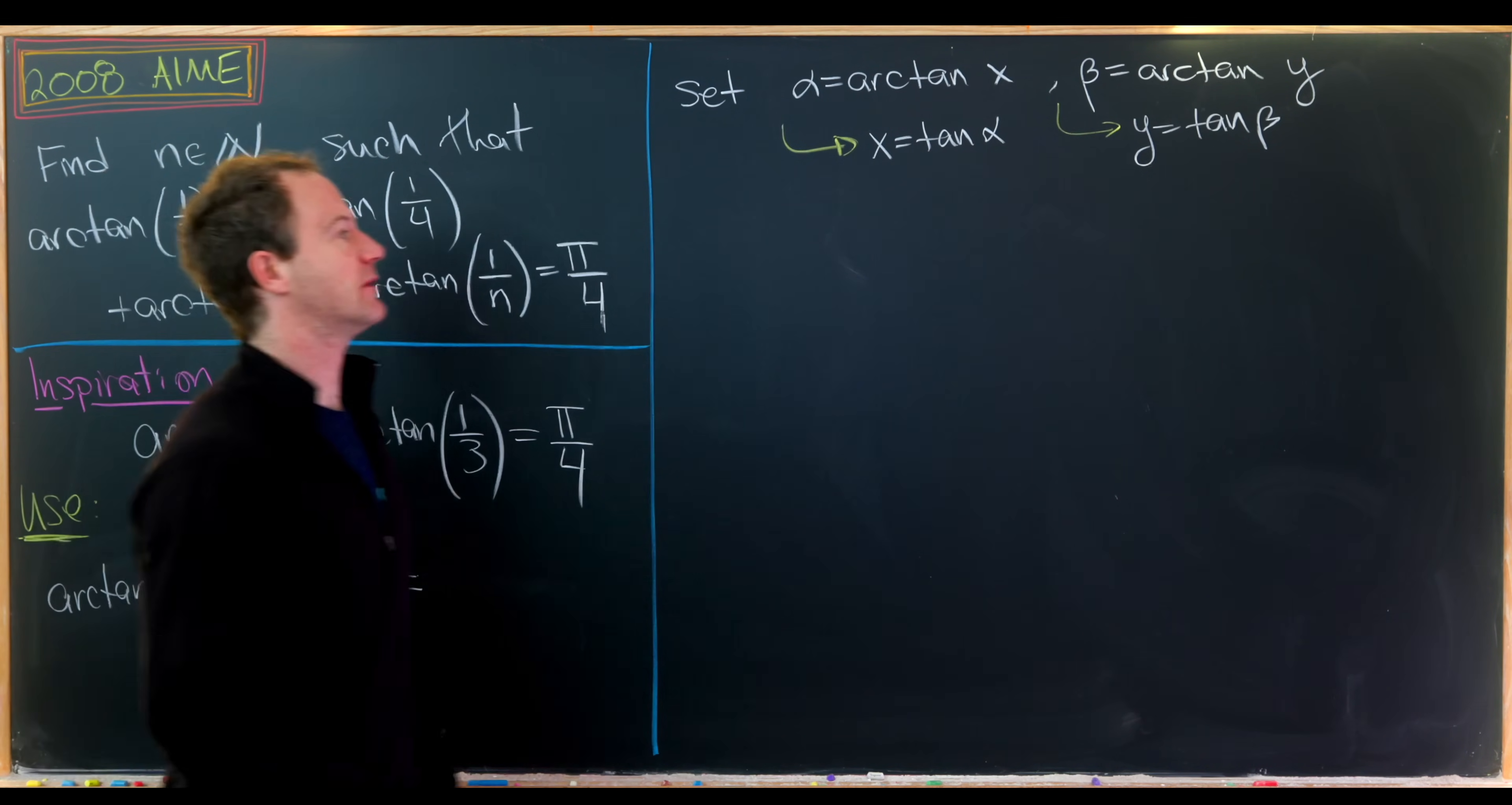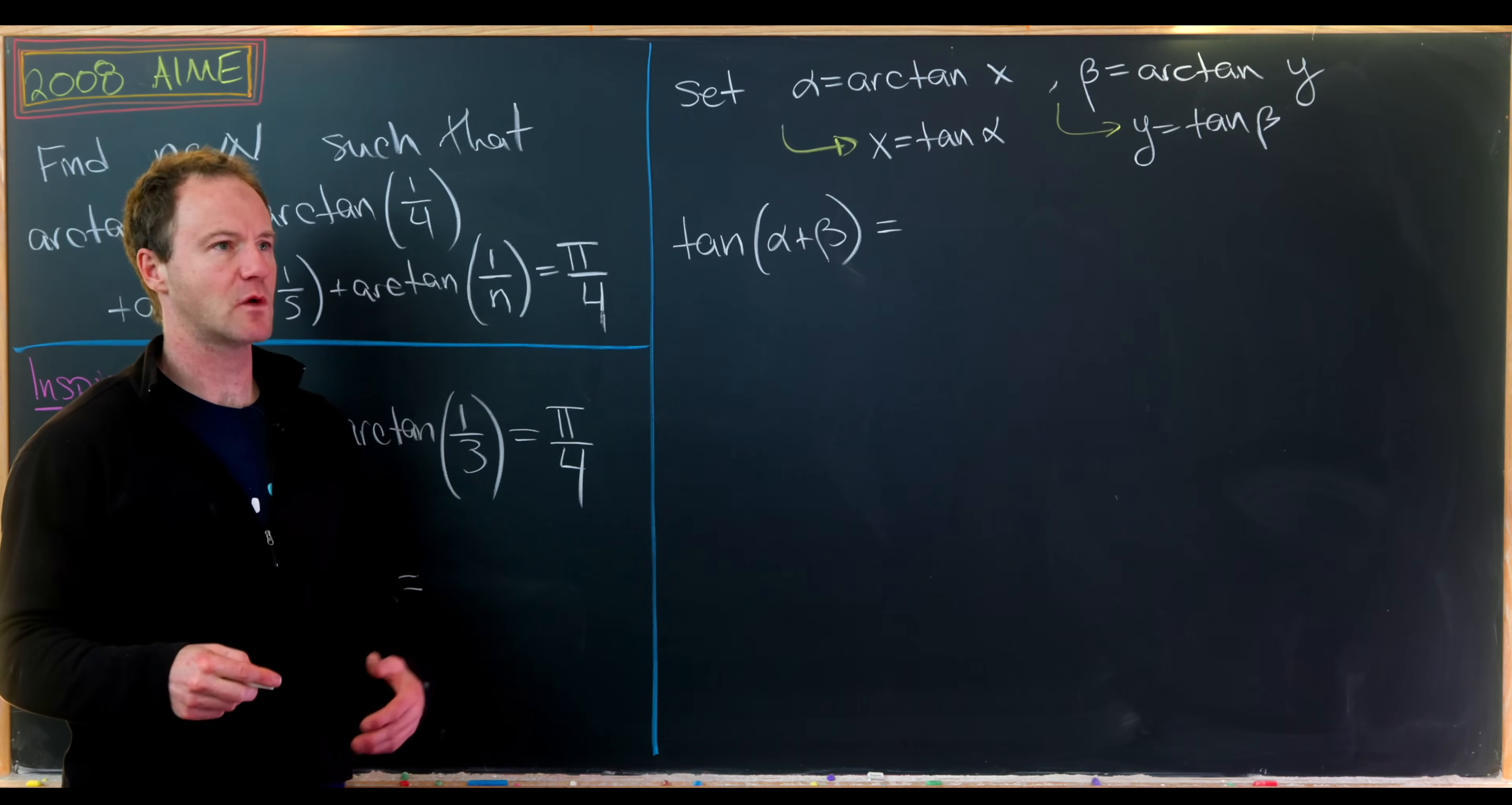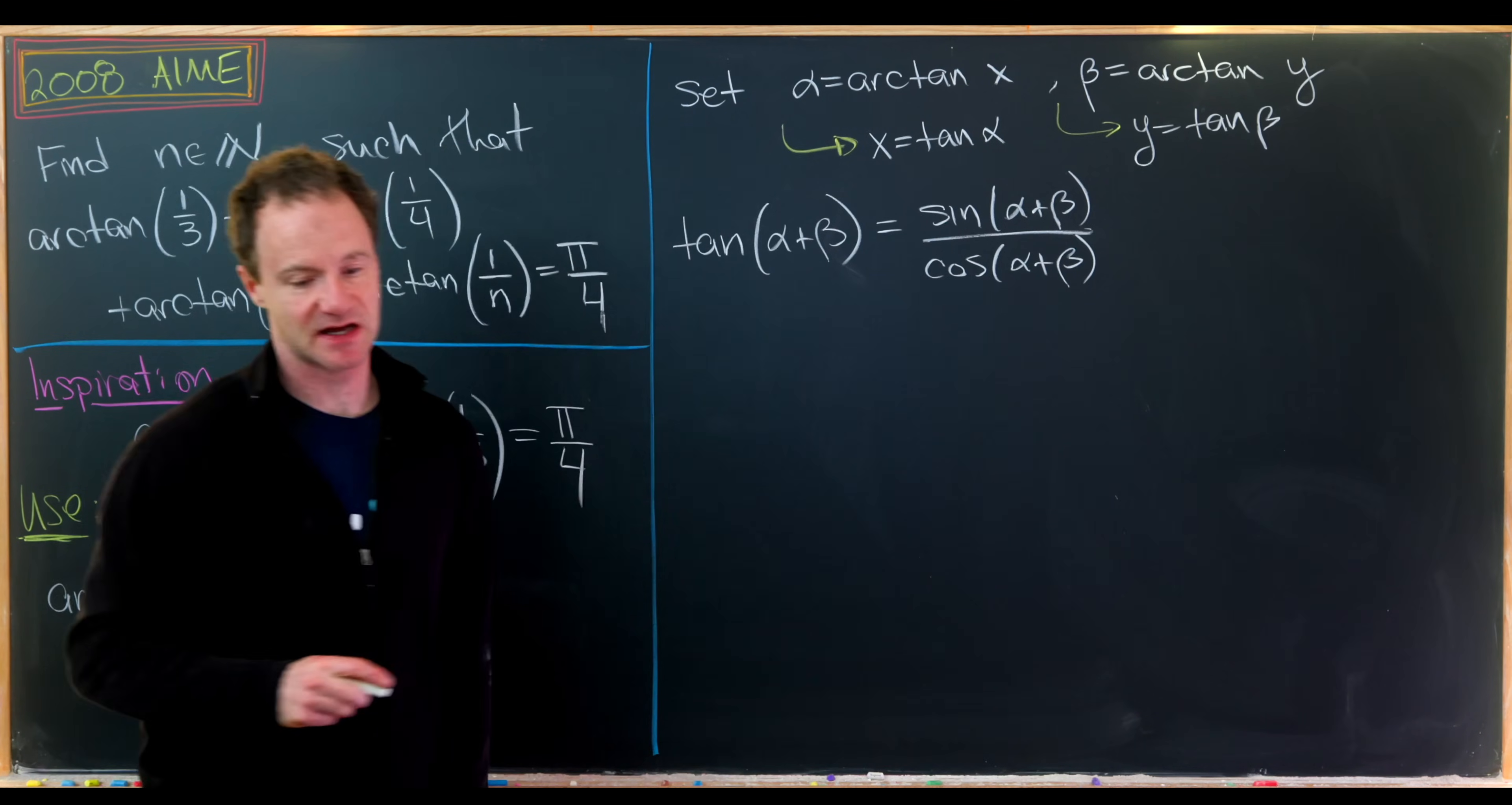Now we're going to get at it. Let's find tan(α + β). There are a number of ways to get sum formulas for tangent. I'm going to work through the sum formulas for sine and cosine, but I won't derive those. This equals sin(α + β)/cos(α + β), given that tangent is sine over cosine.